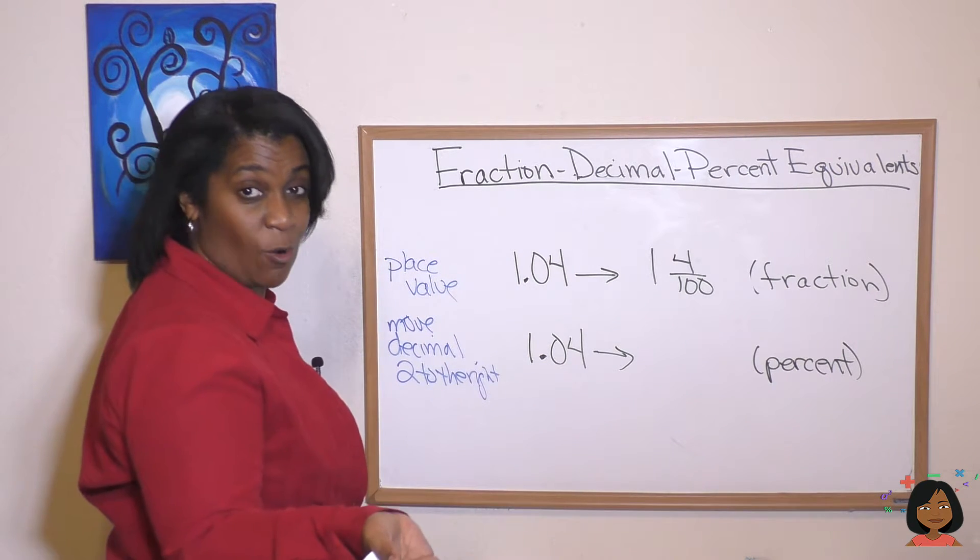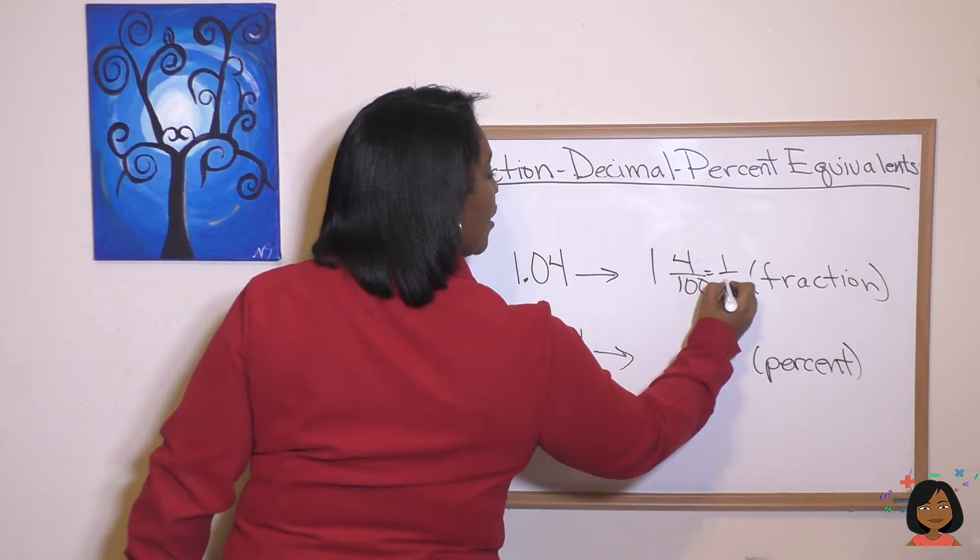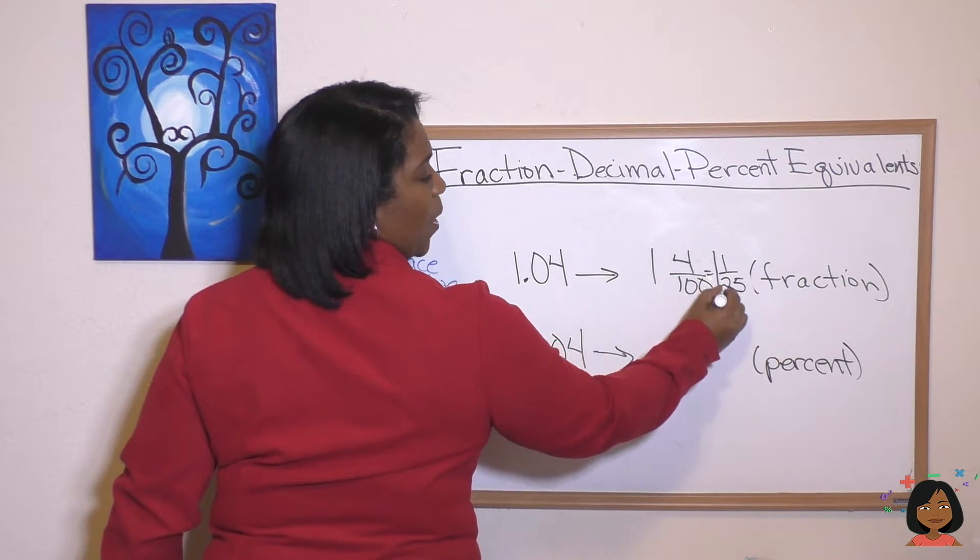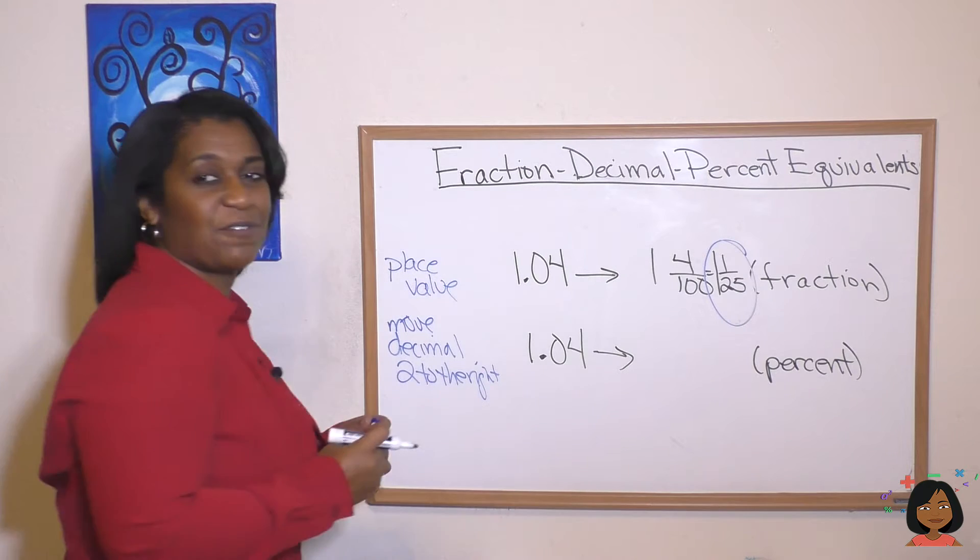Now can our 4 over 100 be simplified? Sure it can. 1 over 25. So it's going to be 1 and 1/25 as our simplified fraction.